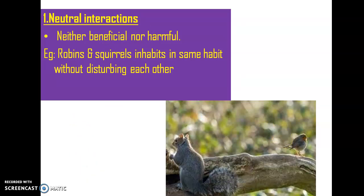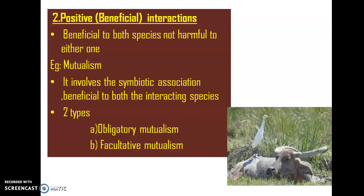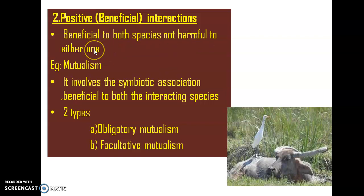In positive interaction, for interaction to take place there will be a minimum of two members, and both these members will be equally benefited with no harm to either of the interacting ones — that is called a positive or beneficial interaction. One of the most important phenomena found in positive interaction is called mutualism. Mutualism involves a symbiotic association which is beneficial to both the interacting species.